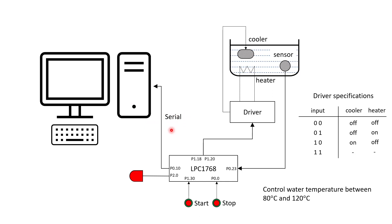The temperature read from the sensor will be sent to the PC using UART serial communication. We also have an LED indicator for temperature level: when temperature exceeds 120°C the LED is very bright, when below 80°C the brightness is very low. We control the LED brightness using a PWM signal generated from pin P2.0.